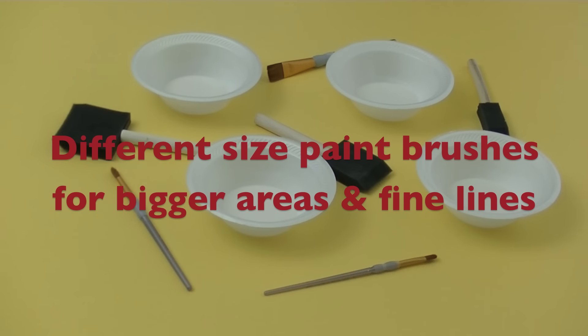So the first thing you're going to need is paint brushes and paint bowls. You also need a pencil and an eraser and whatever kind of paint colors you're going to be using.